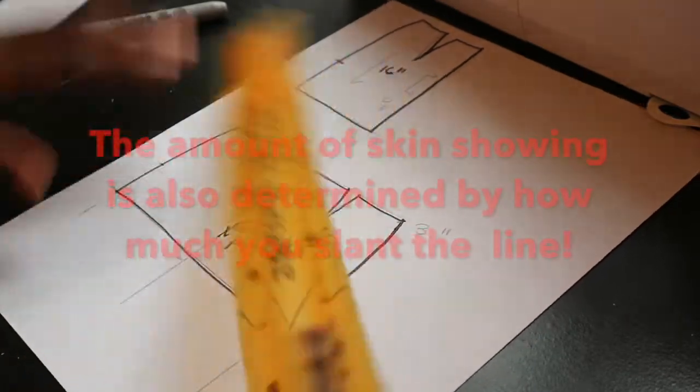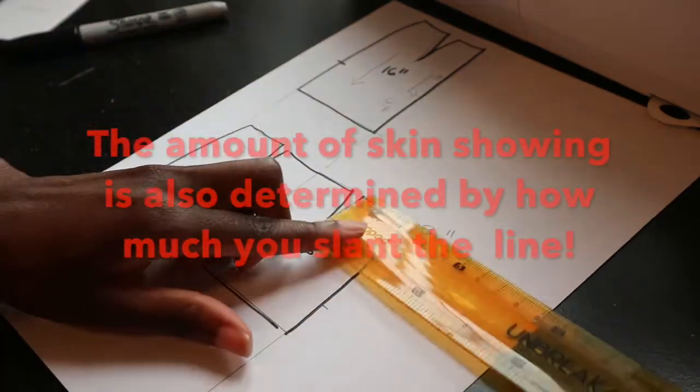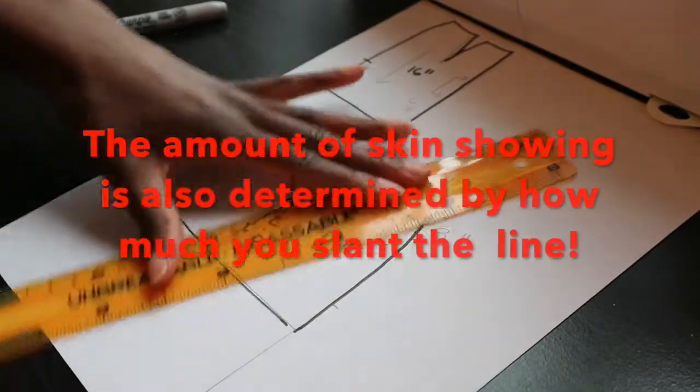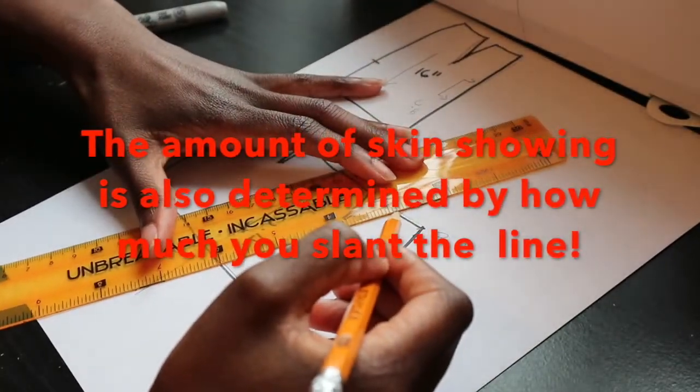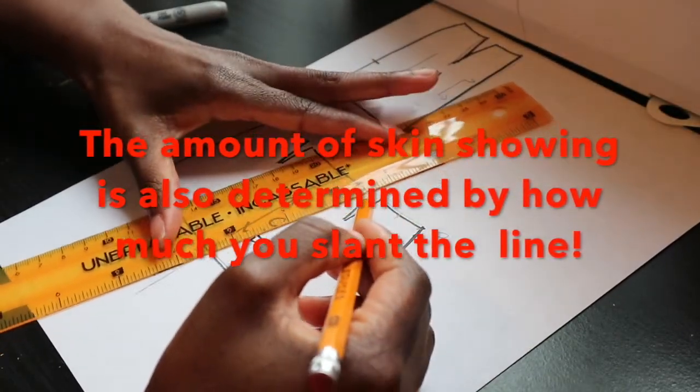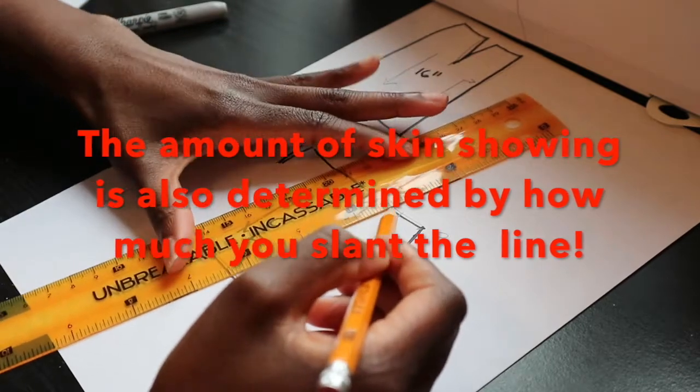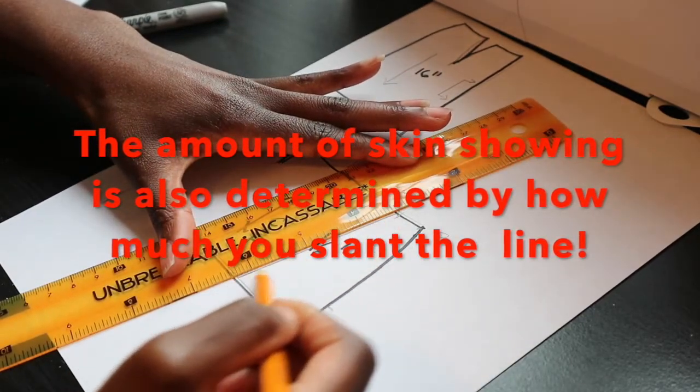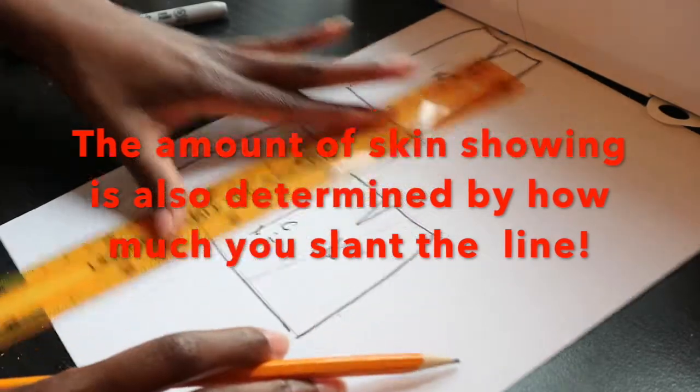If you want more wrap and don't want as much skin showing, you would want to stick to bringing it all the way to the side seam. I put three inches on the piece of paper, but I actually measured about an inch or two inches away from the side seam.